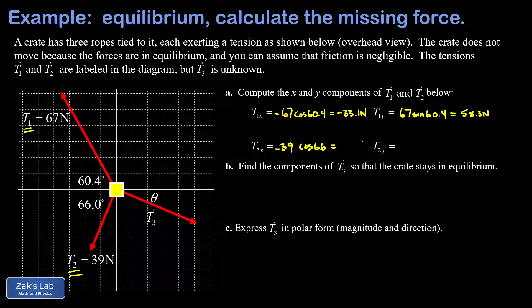And finally, t2y also takes a minus sign. The vector has a magnitude of 39, and then I multiply by the sine of 66 to get that y component. This gives me negative 35.6 newtons. So there's our two known force vectors all broken down into components.